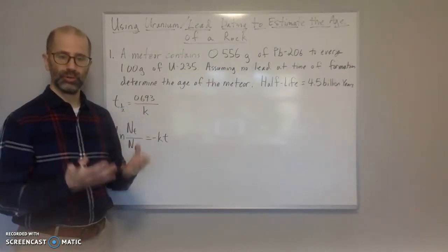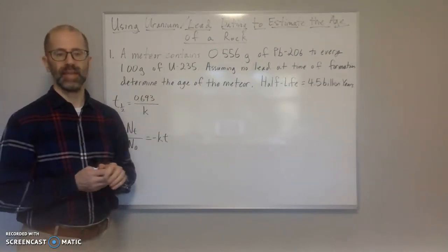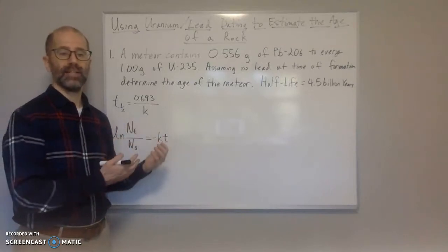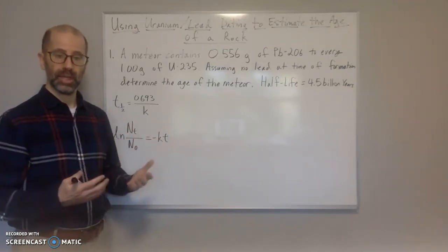We have a meteor that contains 0.556 grams of lead-206 to every 1 gram of uranium-235. So we have a ratio of 1 to 0.556 grams. And assuming that no lead at the time of the formation of the meteor, right, so when the meteor was first formed, there was no lead.